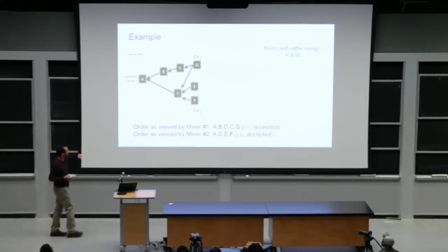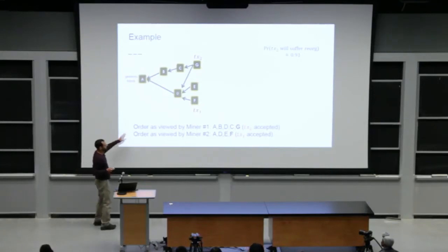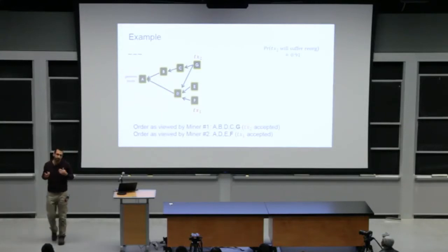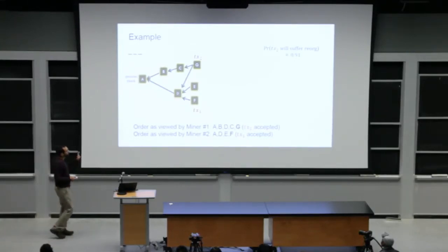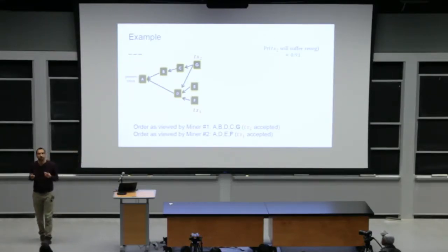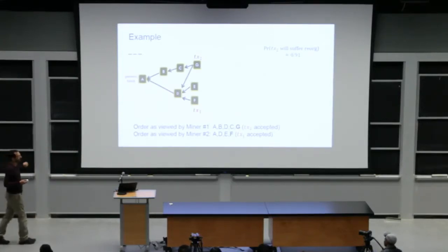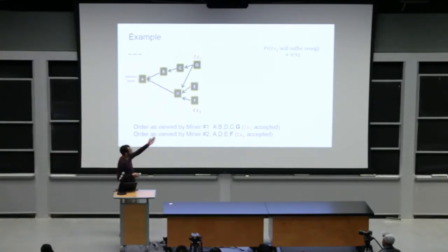Okay. So a moment. So here it could be that temporarily two miners have different worldviews. Temporarily like in Bitcoin, let's say I mind a block. I didn't send it to you yet or it's propagating in the network for a few seconds. It might be that you think that there's one chain and I know about a different chain. So if the client here, let's say a minor, one wants to calculate the probability that transaction two will not be accepted.